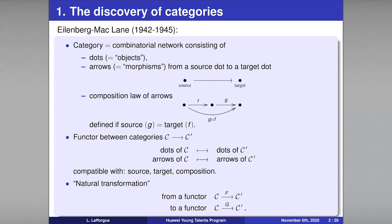The two first data are dots and arrows. The third datum which defines a category is a composition law for arrows: when you have two arrows relating three dots such that the target of the first arrow is the source of the second, you should be able to associate to them a composed arrow going from the first dot to the last dot. This has to verify some rules.